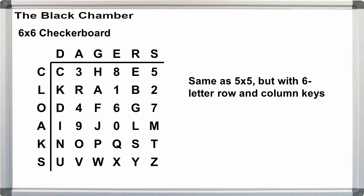Variations. 6x6 checkerboard is exactly the same thing as 5x5, with the addition of the 36-character alphabet. Note that the digits 1 through 9 and 0 all follow their paired letters A through J. For the example keyword checker, we have C3, H8, E5, K, R, A1, B2, and so on.